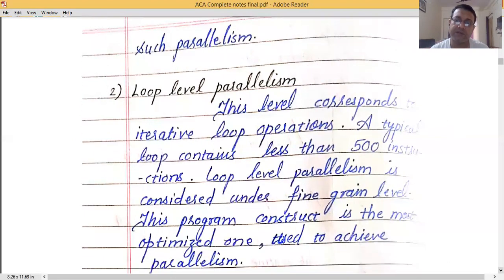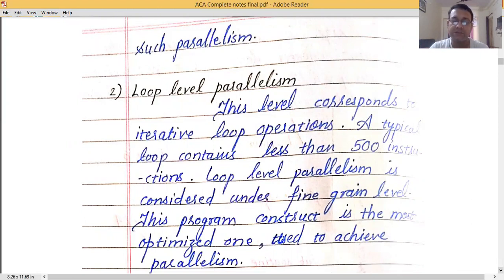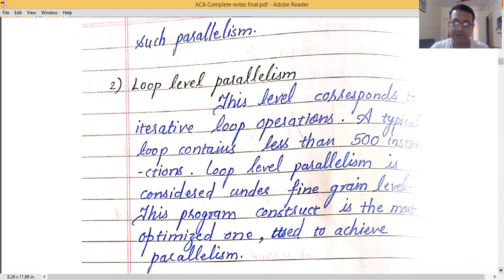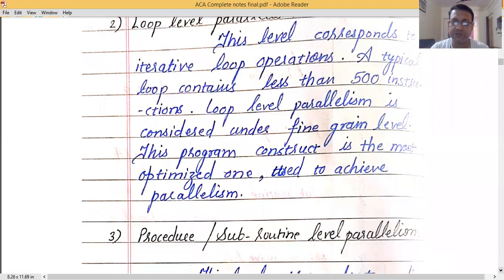The second level is loop level parallelism, which corresponds to iterative loop operations — where operations are performed repeatedly by successive increments or decrements. If a loop segment consists of fewer than 500 instructions, it falls under loop level parallelism. Both instruction level and loop level parallelism fall under fine grain, and these concepts are normally used to achieve parallelism.